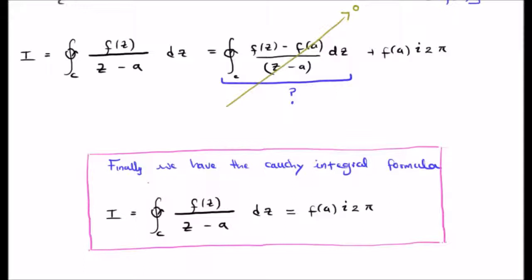In fact we get the value of a function small f evaluated at the pole multiplied by twice pi i.